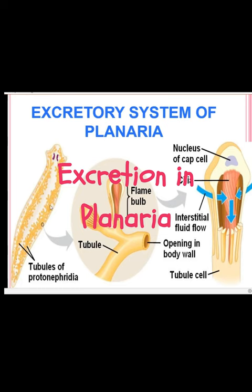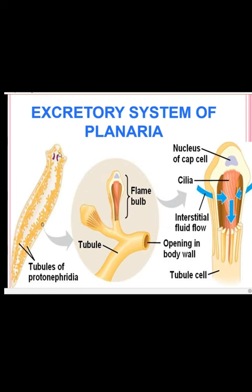In this planaria, you can observe the excretory system which is tubular in nature inside the body. These tubules are having blind ends, and these blind ends are having flame cells. The structure of a flame cell includes a nucleus, a tuft of cilia, and these are the slits.